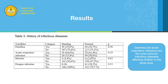Moving to the history of infectious disease: diarrhea and acute respiratory infection are the most common infectious diseases affecting children in the study area. However, from the bivariate analysis, there is no correlation between infectious disease and stunting prevalence. This result differs from previous research showing that infectious disease may affect children's nutrition and growth, and thus stunting. But in this study, there is no such correlation.